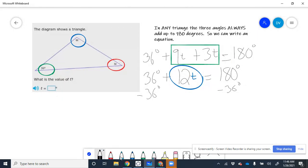Now if we subtract 36, those add up to 0, and we're left with our 12T on this side. And 180 minus 36, I think, is 144 degrees. 144. Let me subtract those.